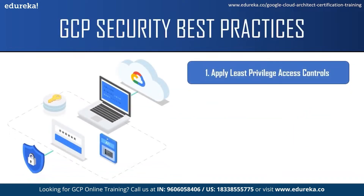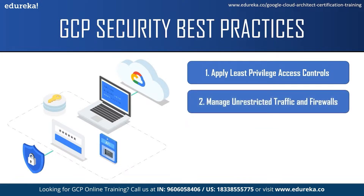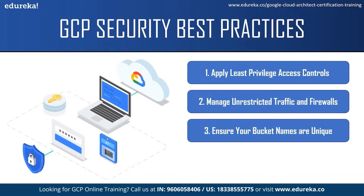The first best practice is to apply least privilege access control with Identity and Access Management. The principle of least privilege is a critical foundation element in GCP security — only providing employees with access to applications and resources they need to properly do their jobs. The next best practice is to manage unrestricted traffic and firewalls — limit the IP ranges assigned to each firewall and only allow the networks that need access to those resources. GCP's advanced VPC features allow very granular traffic control by assigning targets by tag and service accounts. The next best practice is ensuring your bucket names are unique across your whole platform — append random characters to a bucket name and do not include the company's name. For example, names like product-logs-B7-B12-B365 make it harder for an attacker to locate a bucket in a targeted attack.